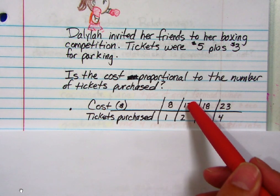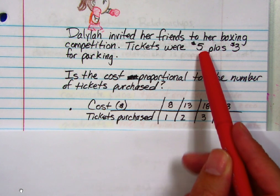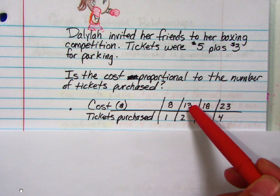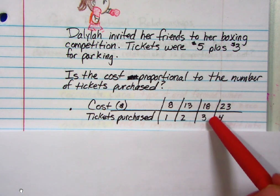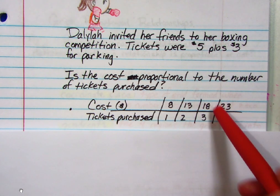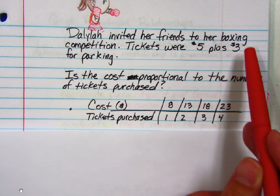If they buy a second ticket, well that's two for five dollars. That's ten dollars. And then three dollars for parking. So that's thirteen dollars. We don't have to double the parking because that's just a one-time fee. Three tickets, three times five is fifteen dollars. Fifteen plus three is eighteen dollars. And four tickets, four times five is twenty dollars. Add three, that's twenty-three dollars.